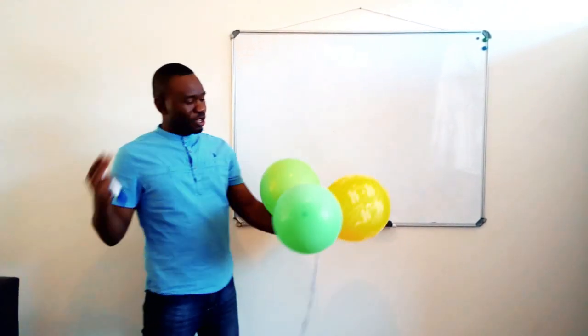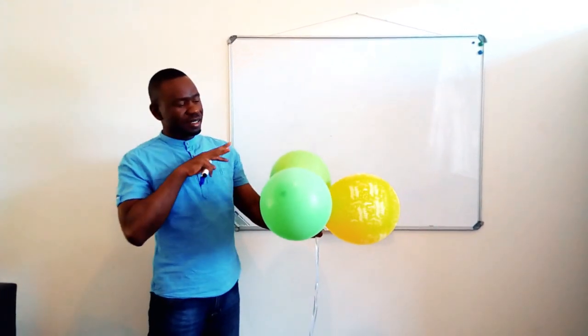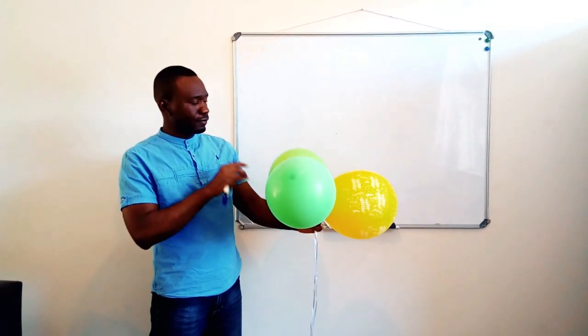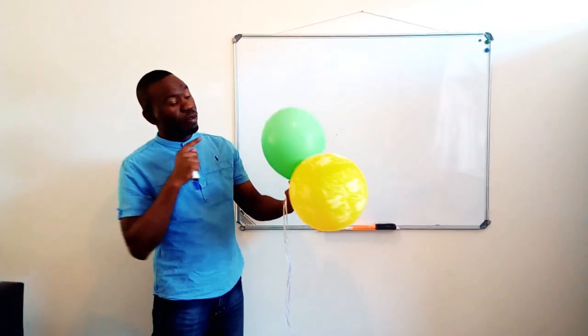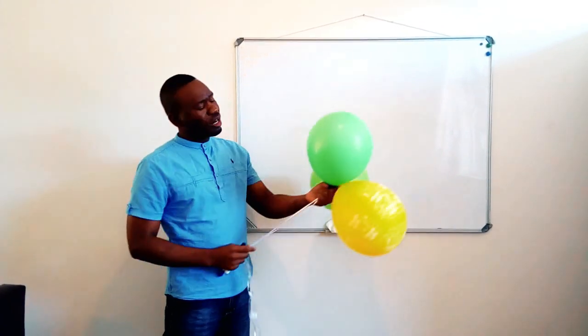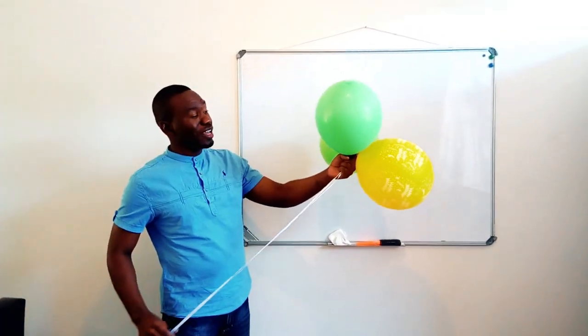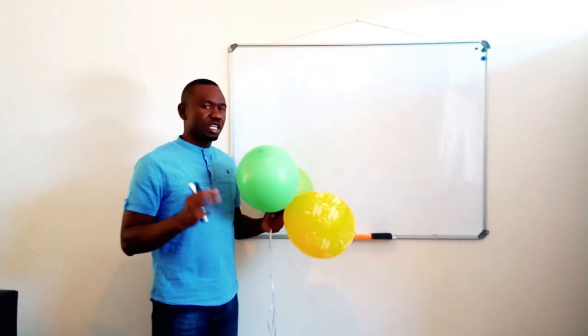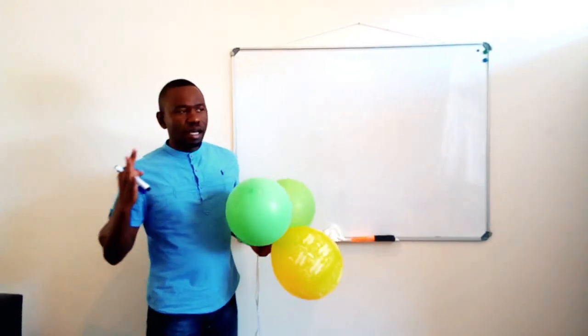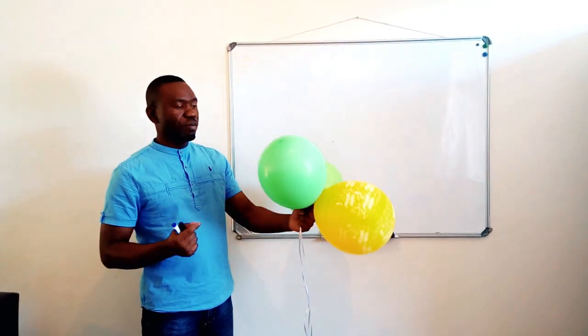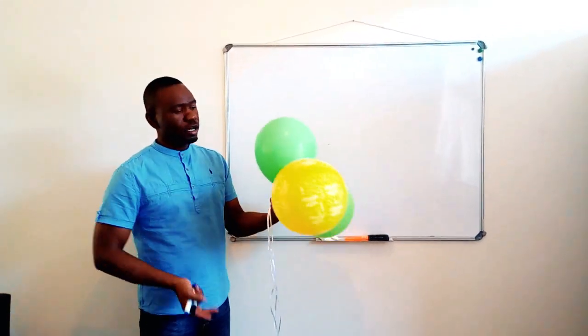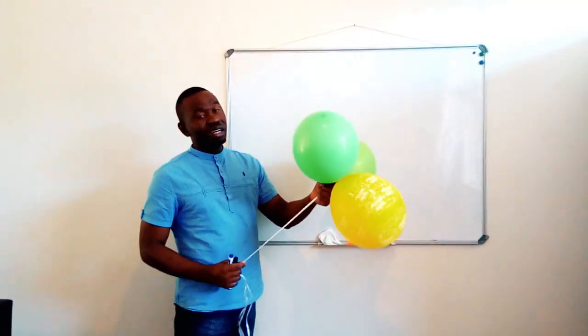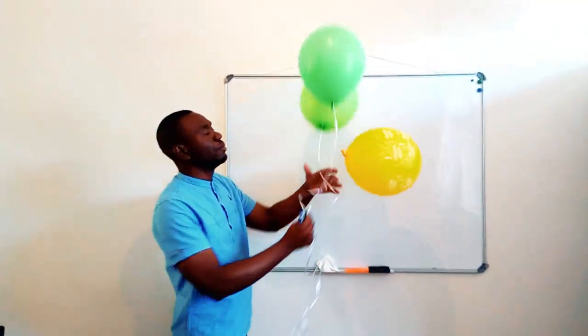I have in front of me three balloons, among which two are full of helium and one full of air. We know that Archimedes' principle states that any object which finds itself in a fluid undergoes a force which is applied vertically upward on the object. I'm going to release this balloon and see what's going to happen.